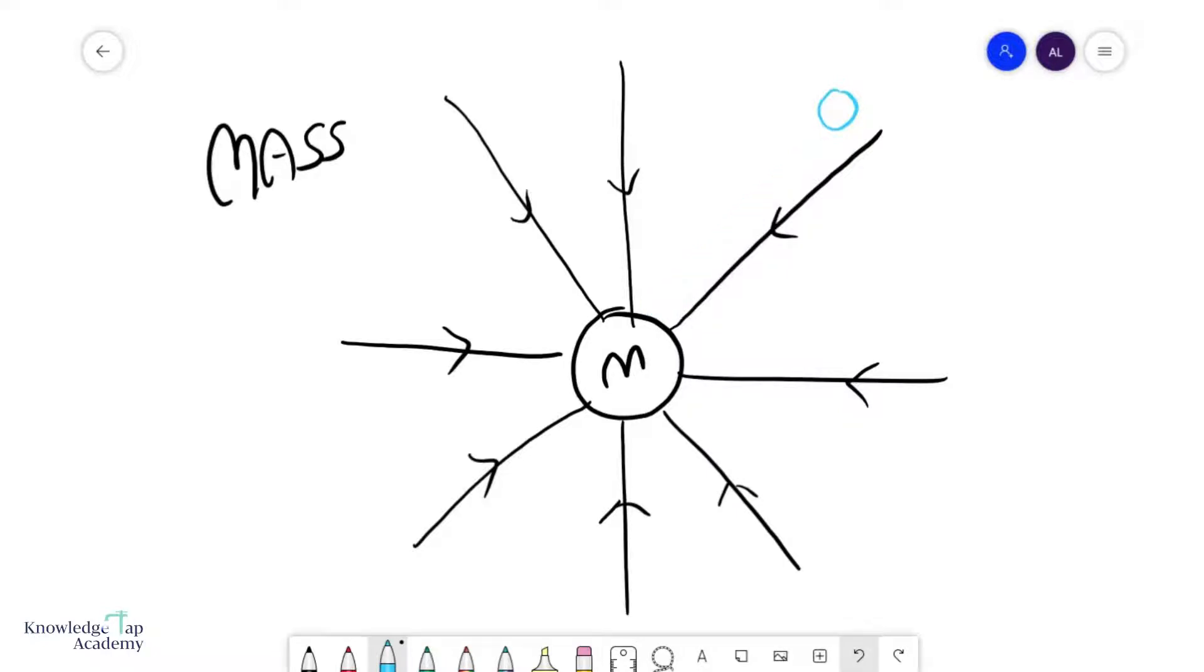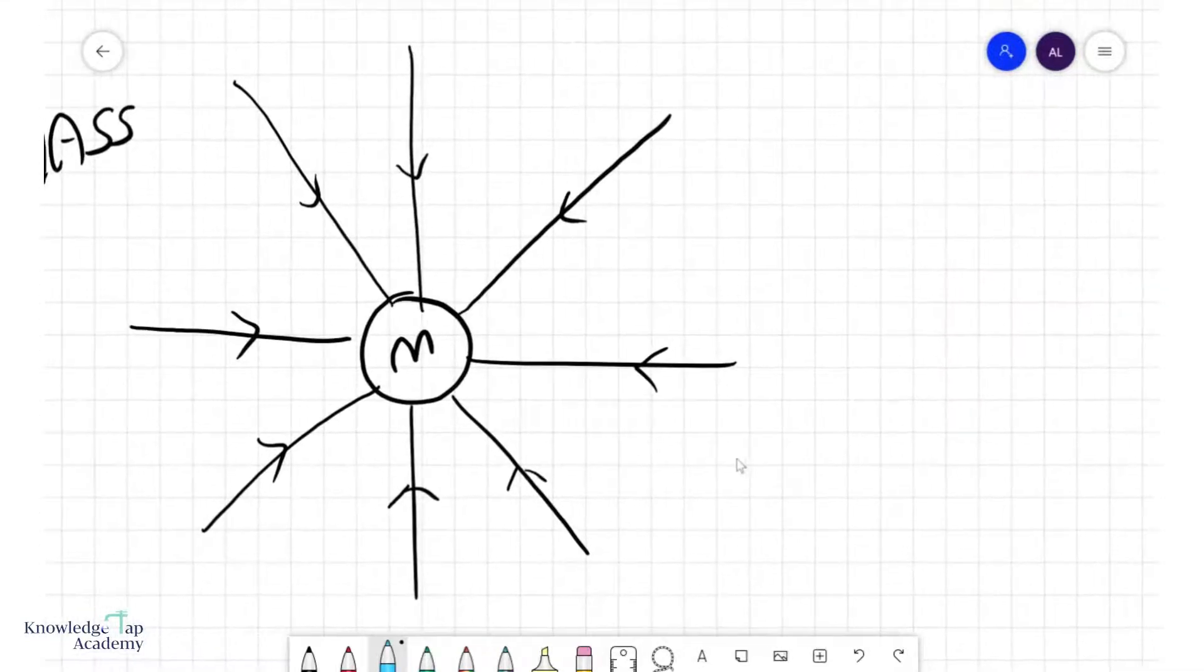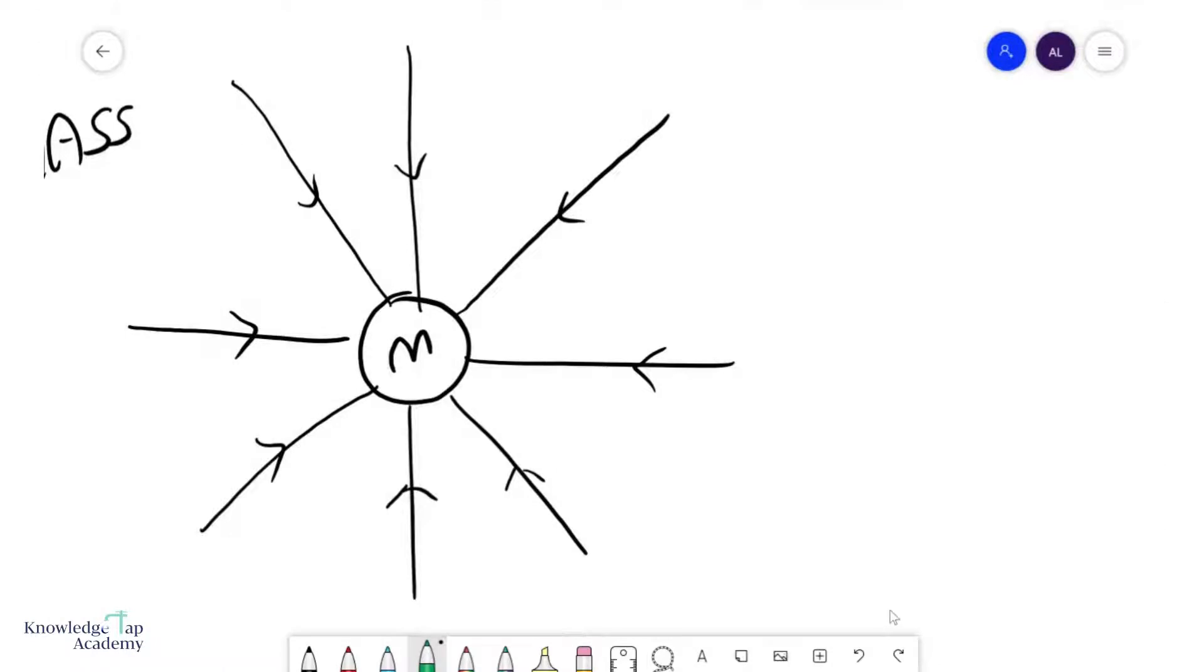So, some key points to understand about field lines. This will apply to all your fields in the future. But let's just focus on gravitational fields first. Number one, like we already said, they must point radially inwards towards a mass. Number two, the density of the lines is indicative of how strong the field is.